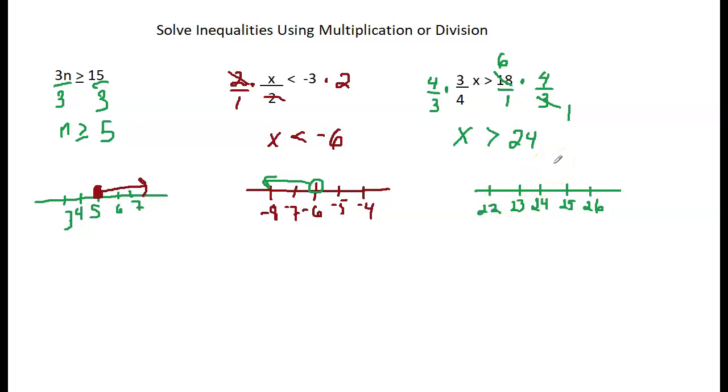I circle where the 24 is. Because the inequality symbol is not underlined, means I do not shade my circle. Now this says x is greater than 24. The numbers greater than 24 go to the right. There we are!